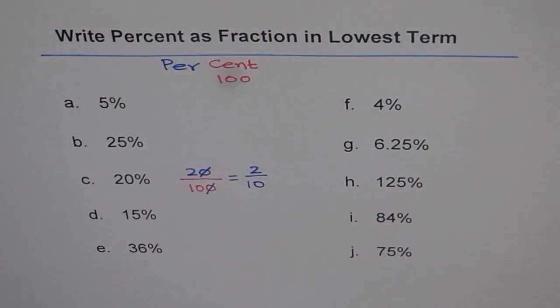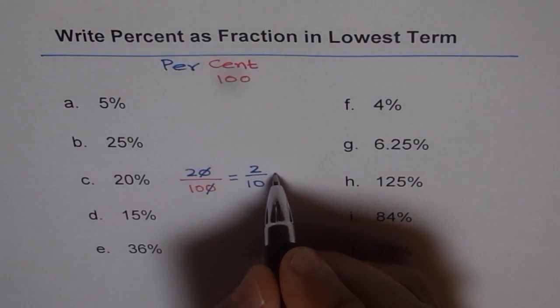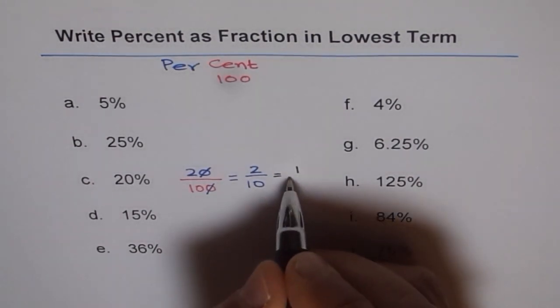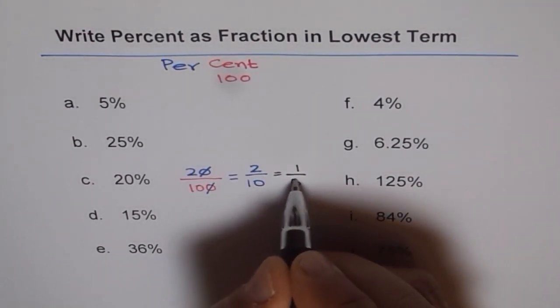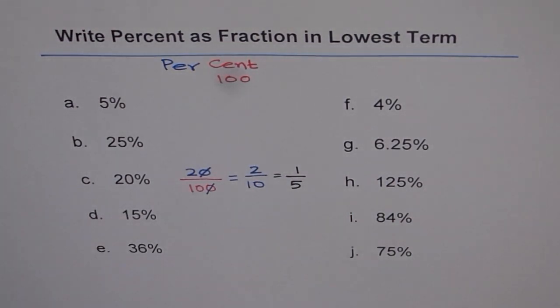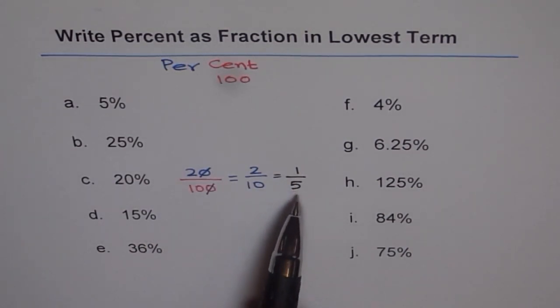Now 2 over 10, both are even, so both can be divided by 2. If you divide them by 2, what do you get? 2 divided by 2 is 1 and 10 divided by 2 is 5. So 1 over 5. So 20% can also be written as 20 over 100 or 2 over 10 or 1 over 5.